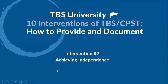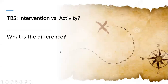So like I already alluded to, this is the second week. We're talking about achieving independence. And before we go much further, I just want to take a second to make sure that people are clear — when we say intervention, when we say activity — there is actually a difference between an activity and an intervention. When you do your progress note, you'll choose an intervention, and underneath the interventions are a variety of activities that you can select from.